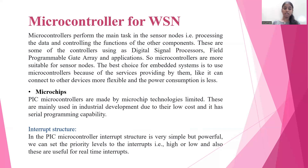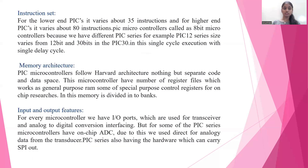Microchips are an example of microcontrollers for WSN. Microchip's PIC microcontrollers are made by Microchip Technologies Limited and are mainly used in industrial development due to low cost and serial programming capability. The interrupt structure in PIC microcontrollers is simple but powerful. Priority levels can be set for interrupts as high or low, and they are useful for real-time interrupts. For lower-end PIC, the instruction set varies about 35 instructions, and for higher-end PIC it varies about 18 instructions.